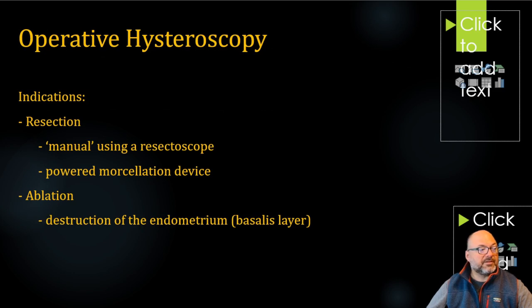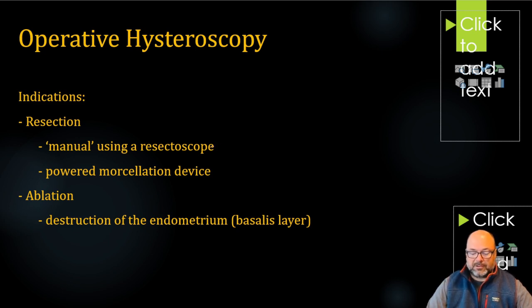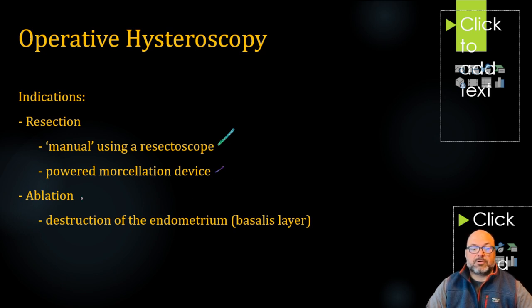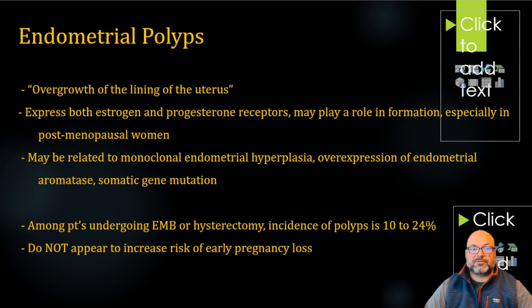As far as operative hysteroscopy itself — what are we going up inside the uterus to do? It's usually resection. We're usually evaluating pathology, doing a biopsy in one sense, or just removal of pathologic tissue — both a diagnostic and therapeutic approach. We can either do that manually, with curettage, polyp forceps, using a resectoscope, or a powered morcellating device like the Myosure. Or we're doing ablation — destruction of the endometrium getting down to the basalis layer — and NovaSure is what we use for that most commonly.